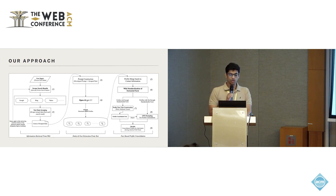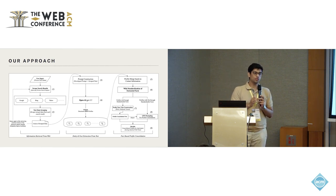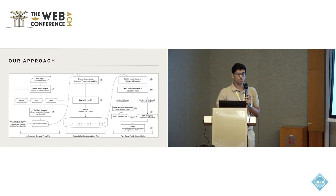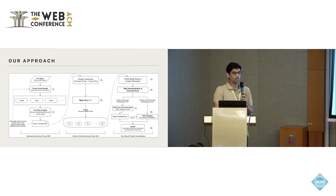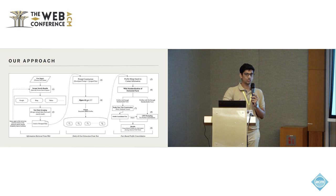The first vertical involves sending queries to search engines such as Google, Bing, and Yahoo with the person's name as input. To ensure exact name matching, we enclose the input name in double quotes and use various search engine optimization techniques. We retrieve the top 50 results from each search engine and then extract the corresponding textual information.